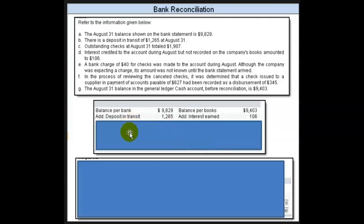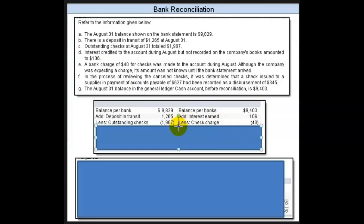We had deposits in transit of $1,265 — that's item B at August 31st. We already have that recorded, but the bank doesn't, so we add that to the bank balance. There was interest earned of $106 — the bank knows that, we haven't recorded it, so we put it on our side. We had outstanding checks of $1,907 — we've already recorded them, the bank doesn't know about them, so we put those on the bank side.